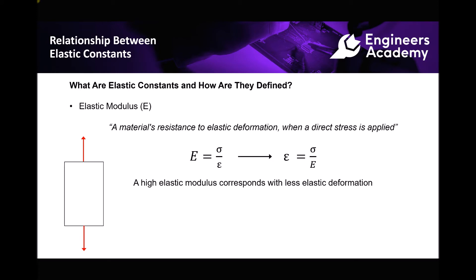The stress on the top of the equation is a product of the force being applied, and the strain on the bottom relates to how much the test piece is deforming. If we rearrange that equation to make strain the subject, we have strain equals stress over elastic modulus. What we can see by doing that is that a high elastic modulus corresponds with less elastic deformation — materials with a greater elastic modulus will exhibit less elastic deformation when direct stresses are applied.